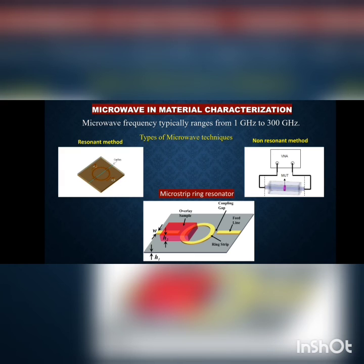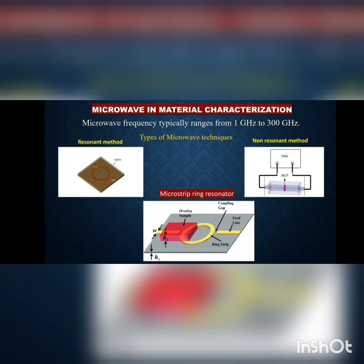The second method is the non-resonant method, in which we place the material in a section of a transmission or reflection line and observe how the frequency changes.